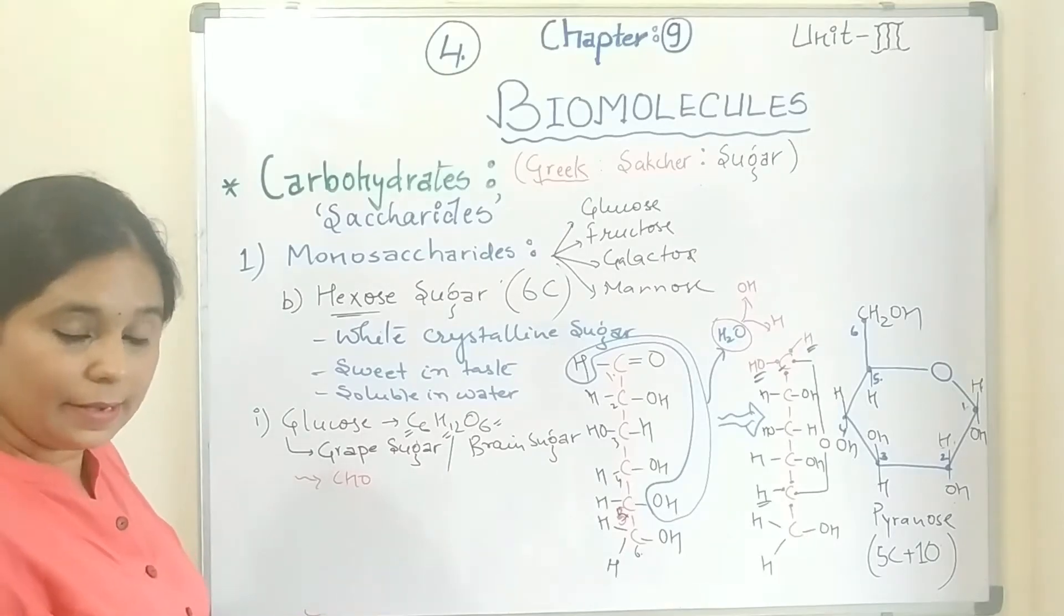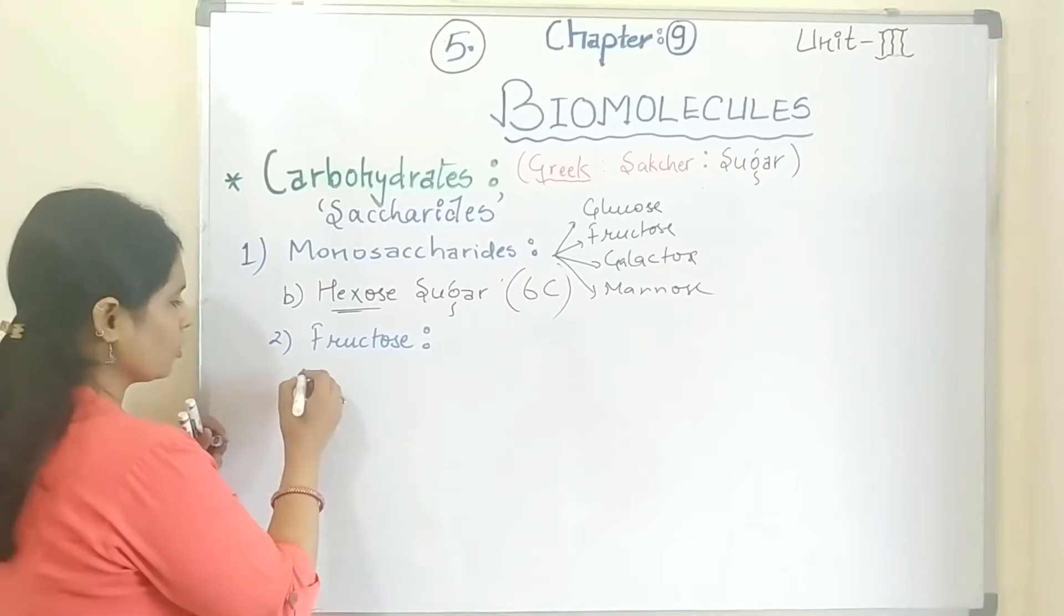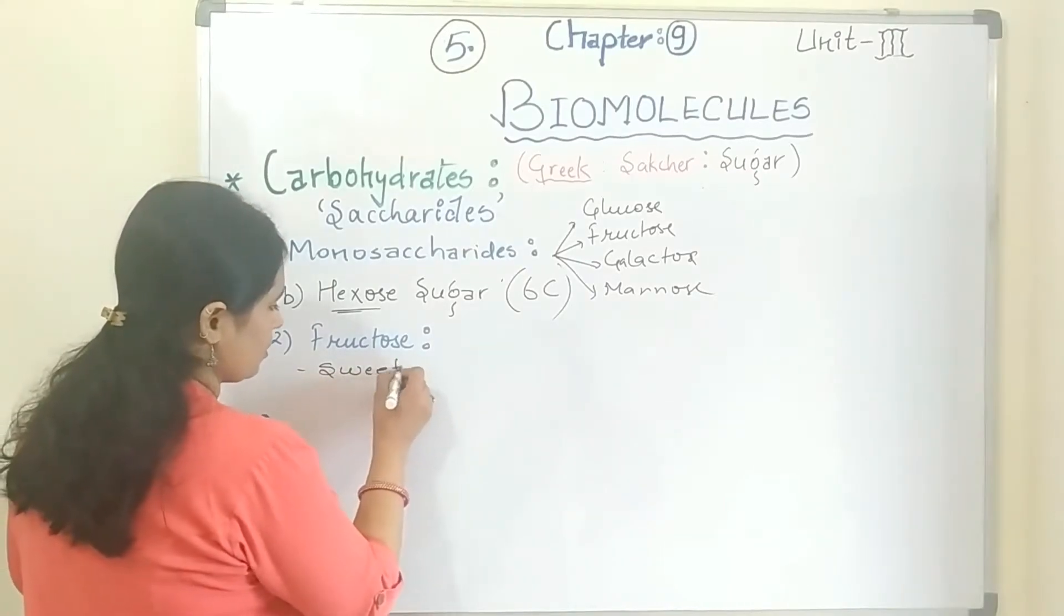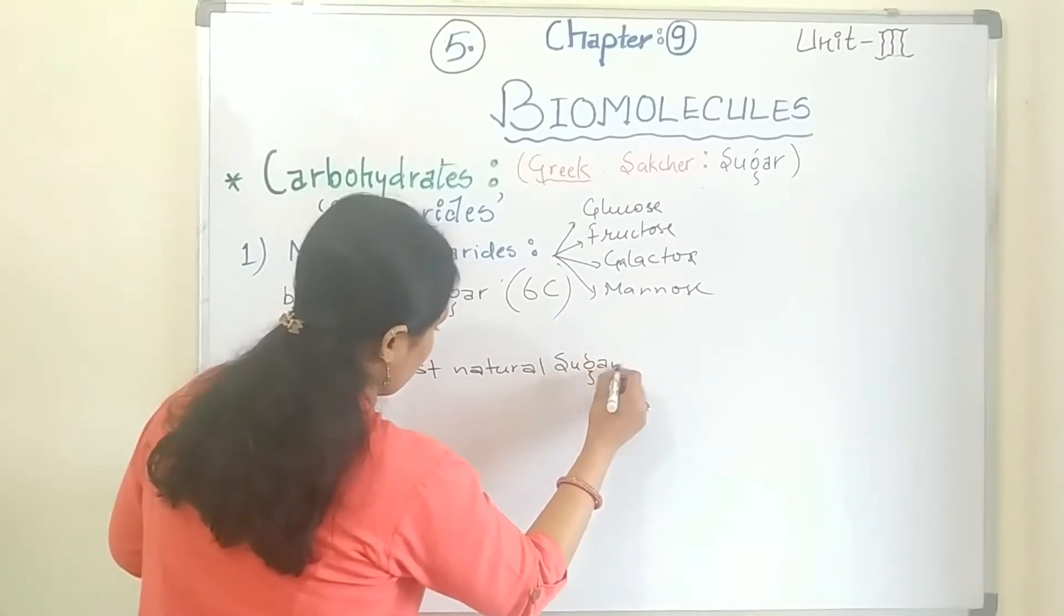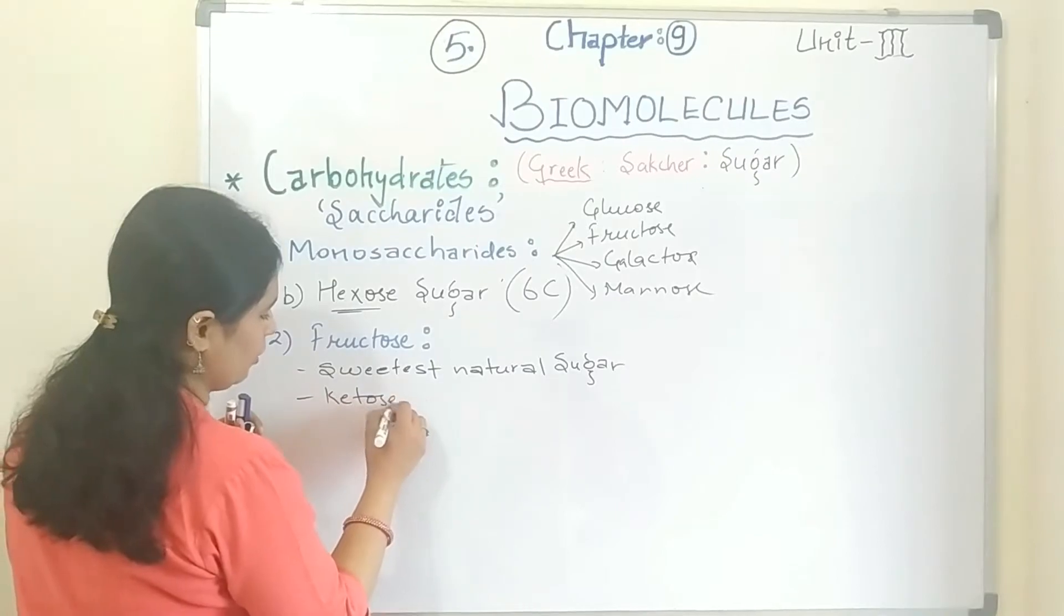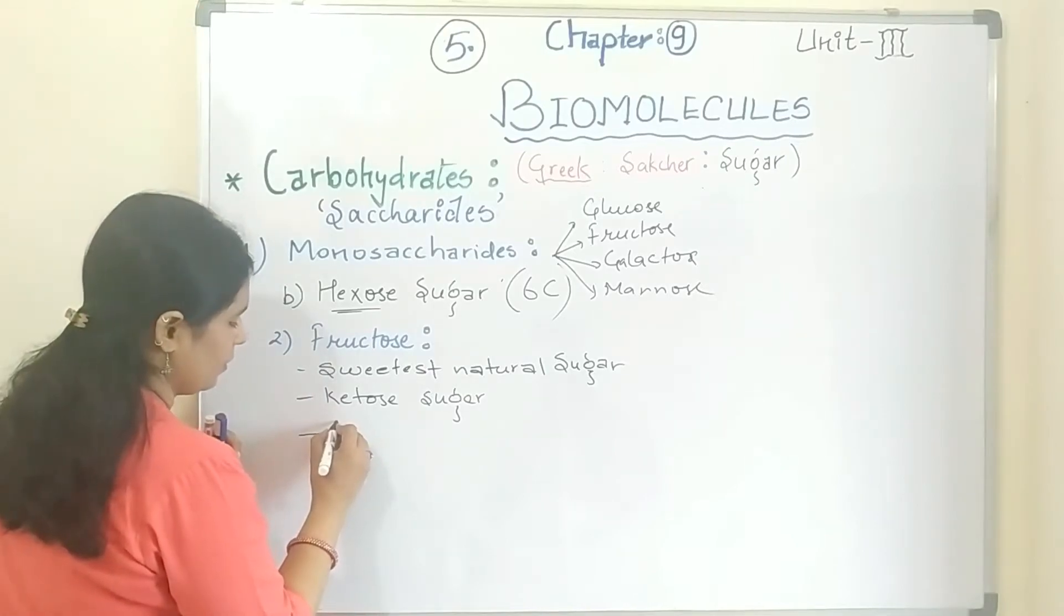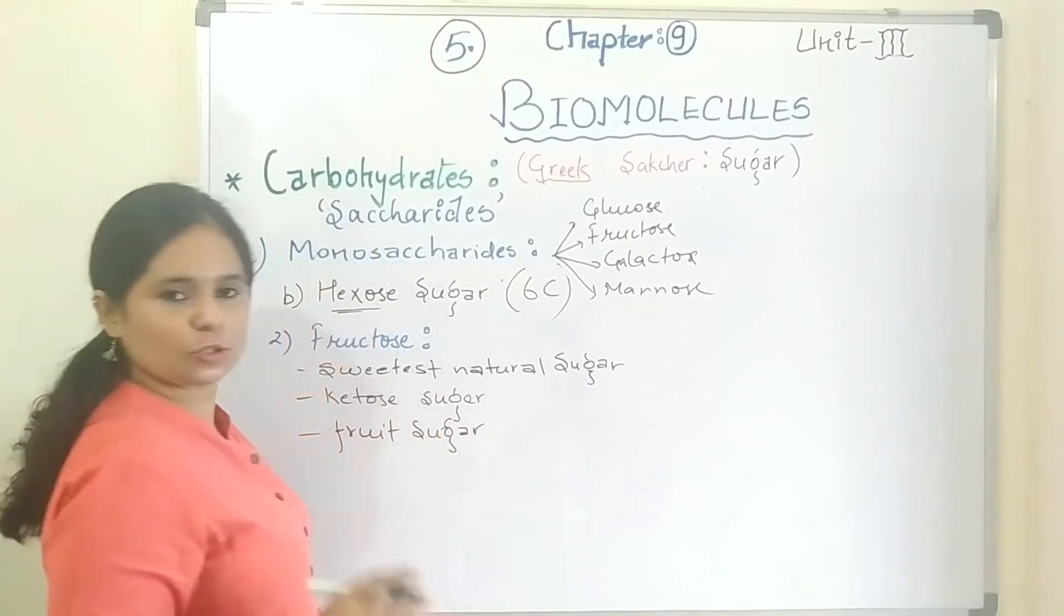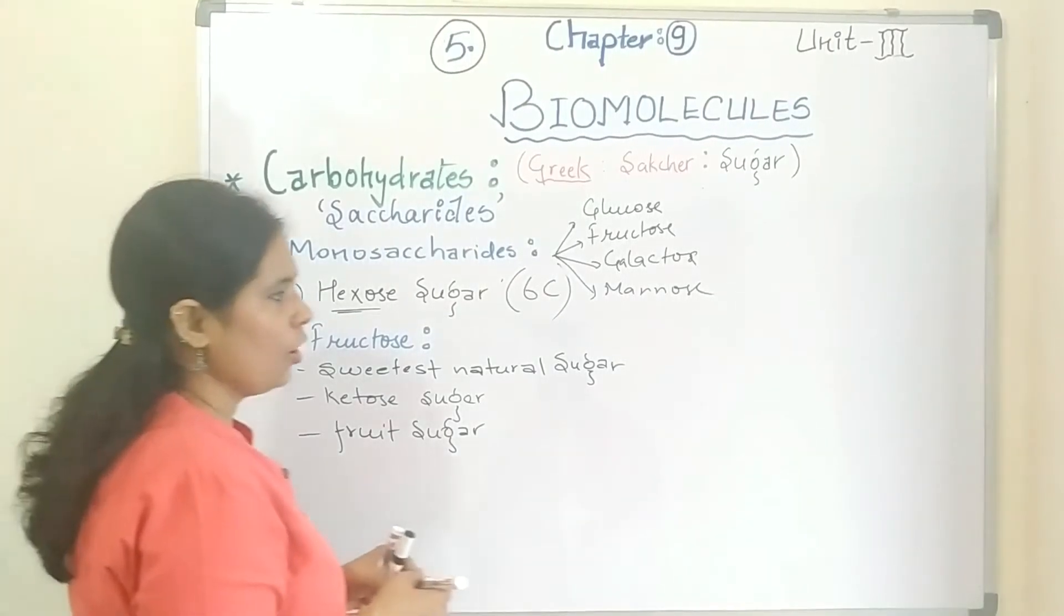Now if we talk about the next one, that is the structure of fructose. As you know, fructose is also a hexose sugar. Fructose is the sweetest natural sugar. It is a ketose sugar. You can also call it fruit sugar. When we eat fruits, it is fructose sugar. I told you it is ketose sugar, so let's draw its chain structure.